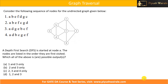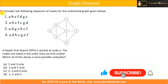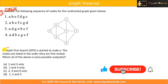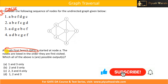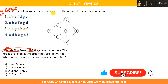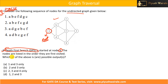In this video we are going to discuss a previous GATE question from CSE branch based on depth first search. In the previous video we discussed breadth first search, but now we'll discuss depth first search. Consider the following sequence of nodes for the undirected graph given below. The depth first search is started at node A. We need to find which of the given options is a possible correct DFS output order.